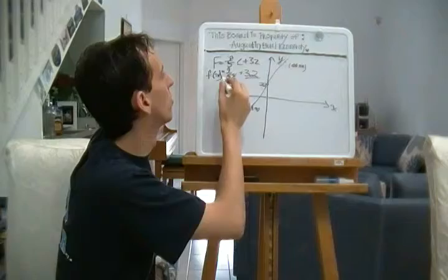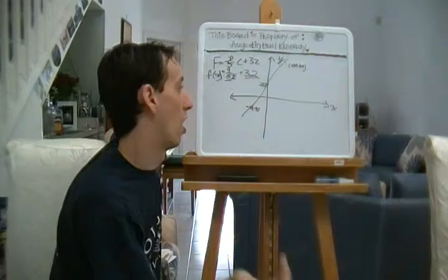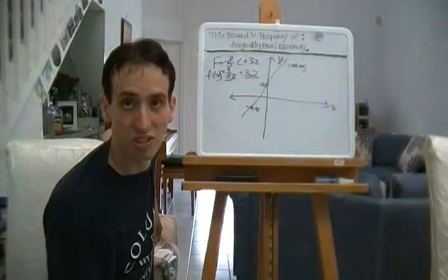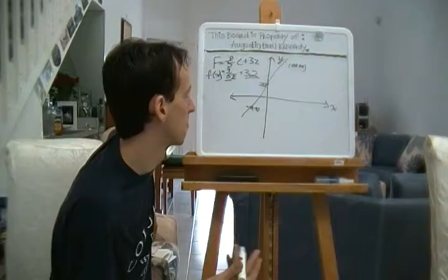And the F intercept is 32, and that is what happens when X or C is 0. So we could say the F intercept is when Celsius equals 0. And we know this to be true: 0 degrees Celsius equals 32 degrees Fahrenheit.